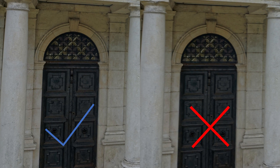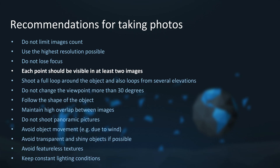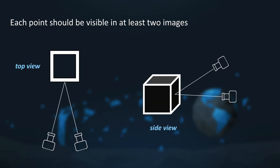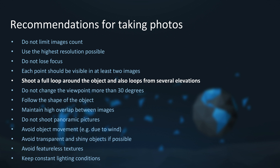In this case the focus point was fine but the blurriness was caused by camera motion. RealityCapture can reconstruct only the points that are visible on at least two images — the more images you have, the better. Here is an example: in the top view you can see that a point on the object is visible in images taken from two camera positions, and another photo was added taken from a different height, visible in the side view.